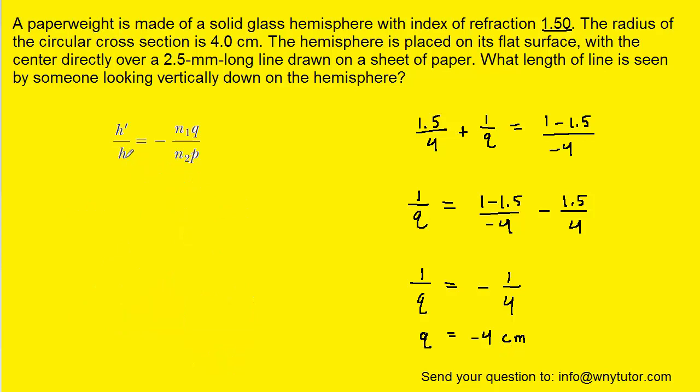So here is the magnification equation. Notice that we're actually trying to calculate h prime, which is the length of the image that the observer is going to see. So why don't we go ahead and multiply both sides of the equation by h.